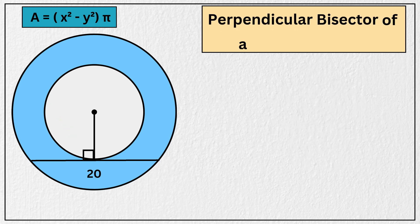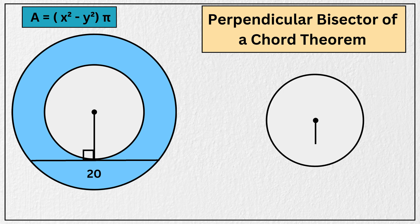Also according to perpendicular bisector of chord theorem, if a line is drawn from the center of the circle to a chord and it is perpendicular, it will divide the chord into two equal halves. That means this is 10 units, and this is also 10 units, correct?